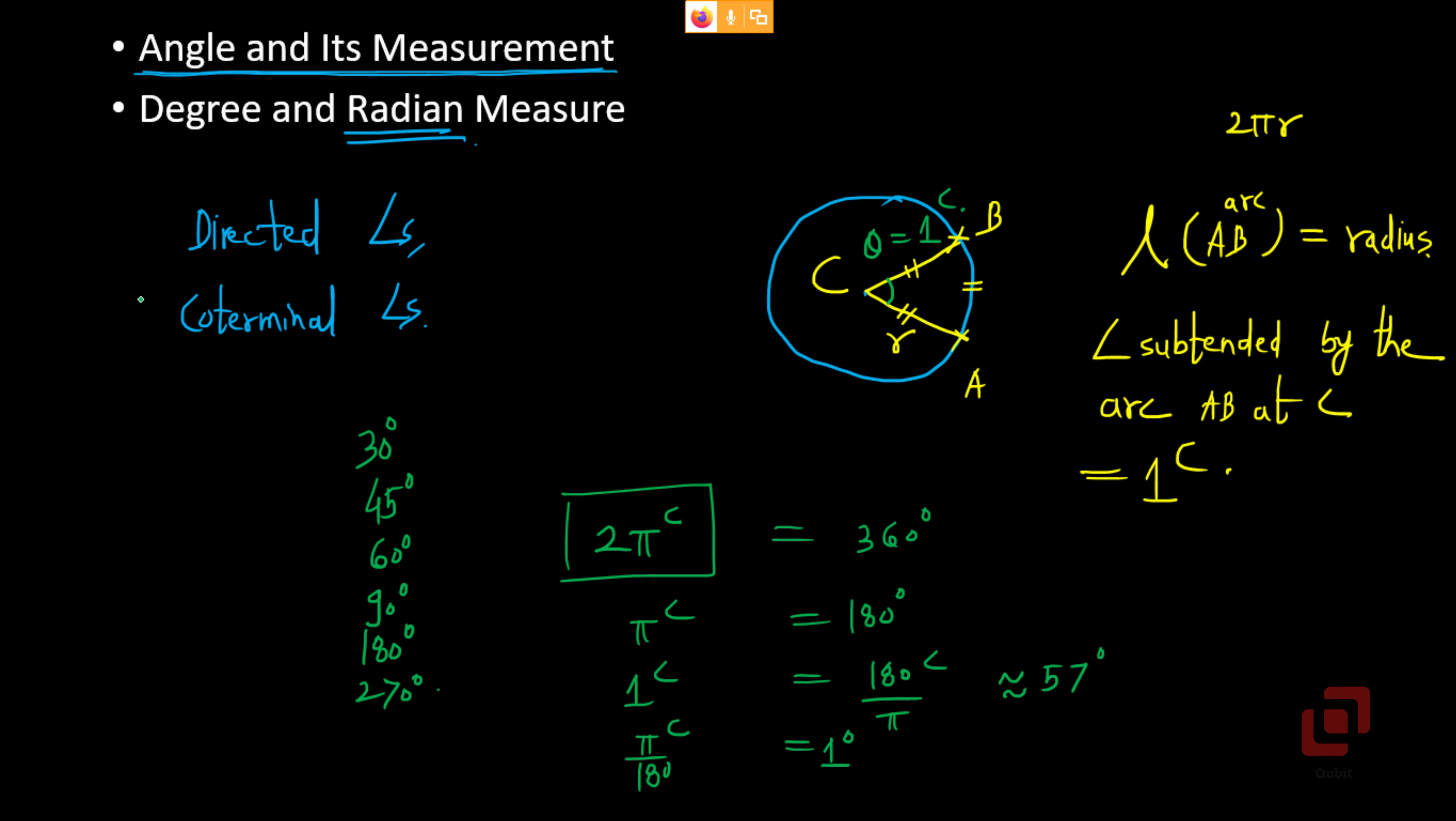The other concept that we will need from the first chapter is the coterminal angles. Now what are coterminal angles? Coterminal angles are those angles whose measures differ by integral multiples of 2π. So theta, theta plus 2π, theta plus 4π and so on, and also theta minus 2π, theta minus 4π and so on. Now where are these 2π, 4π coming from? We observe that 2π is actually equivalent to one full revolution.